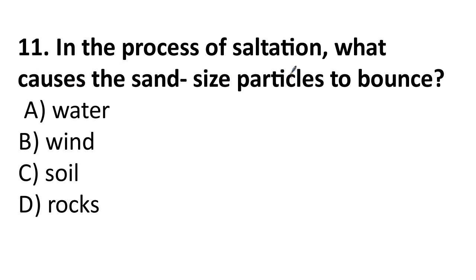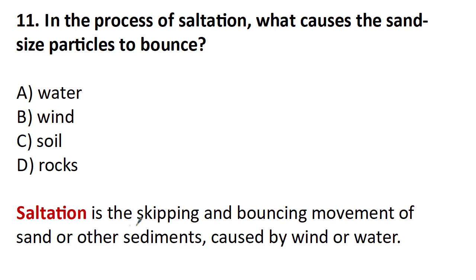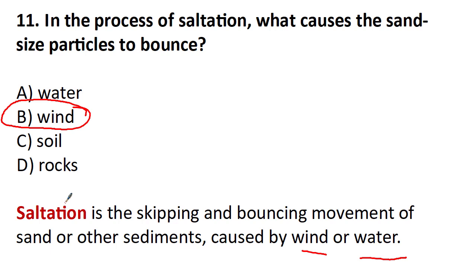In the process of saltation, what causes sand particles to bounce? The options are water, wind, and soil. Saltation is the skipping and bouncing movement of sand or other sediment caused by wind and water. The answer will be wind, because saltation happens mostly in the desert.